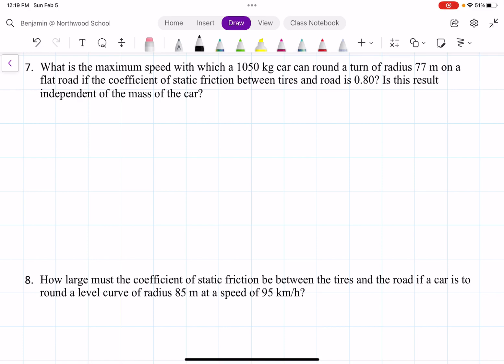We want to determine what is the maximum speed with which a 1050 kilogram car can round a turn of radius 77 meters on a flat road if the coefficient of static friction between tires and road is 0.8. Is this result independent of the mass of the car?